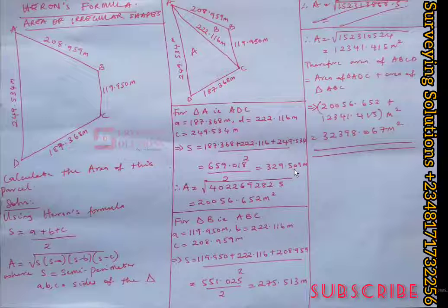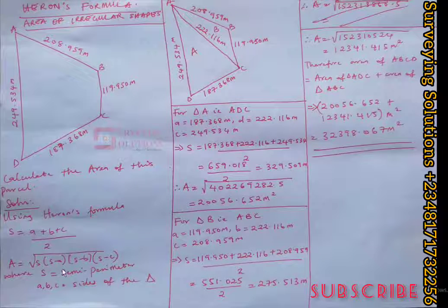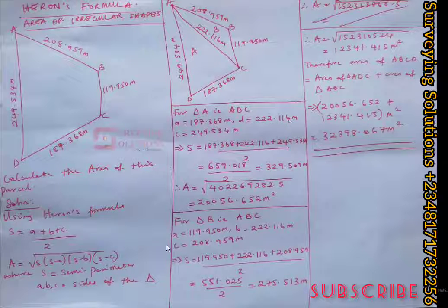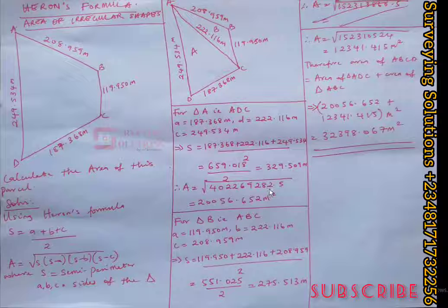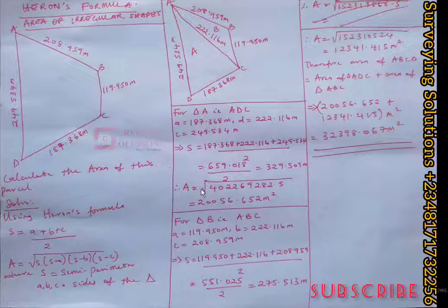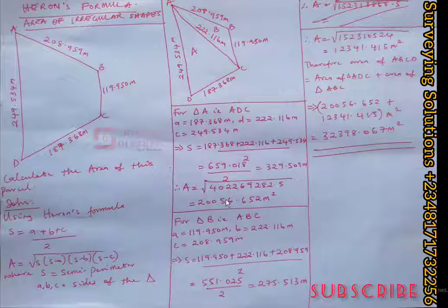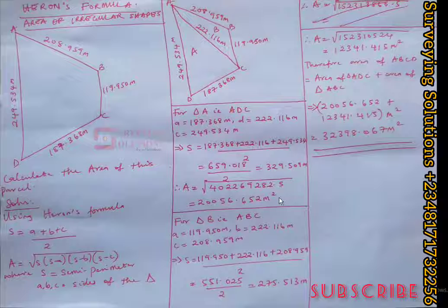Close each bracket carefully. Our case is triangle ADC, not ABC, so keep track of your sides. When you hit equals you should arrive at 40,226,928.25. Then take the square root of that answer — the area of Triangle ADC is 20,056.652 square meters. Pause and rewind if needed, as it's actually quite straightforward.